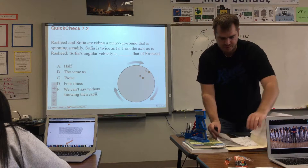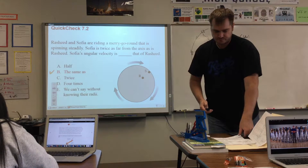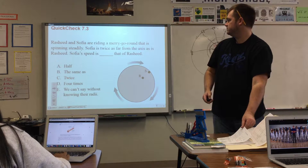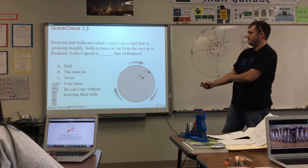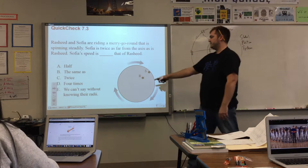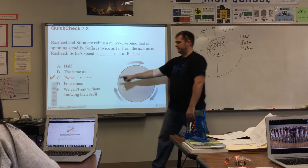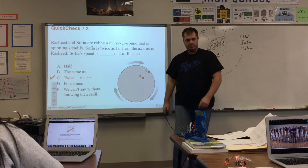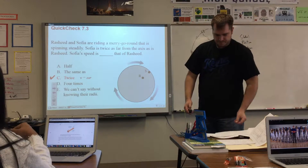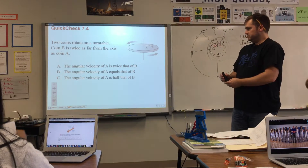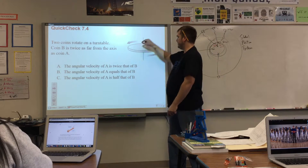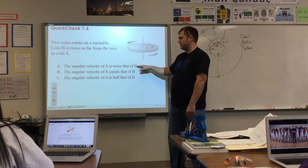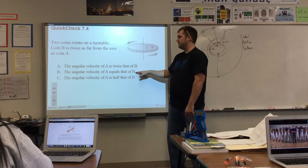For the turntable problem with Rashid: the angular velocity is the same — we just talked about that. And for Sophia, if she's twice as far from the center, her linear speed is twice as fast, because velocity is proportional to radius times omega. For two coins on a turntable where coin B is twice as far from the axis, the angular velocity of A equals that of B — that's correct.